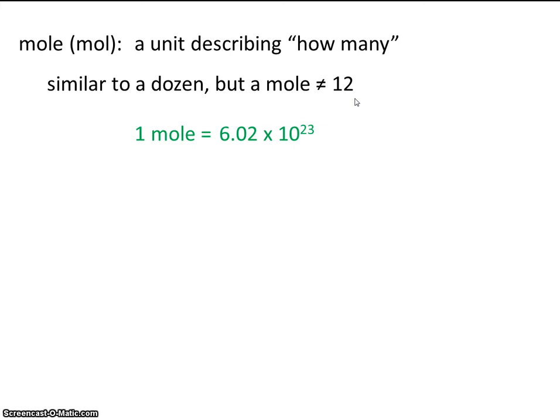So just as you can have a dozen of anything, you can have a mole of anything. So you could have a dozen eggs. That would mean you had 12 eggs. If you had a mole of eggs, that would mean you had 6.02 times 10 to the 23rd eggs.